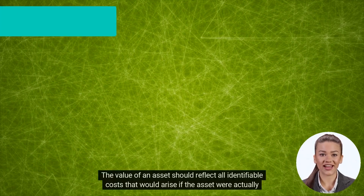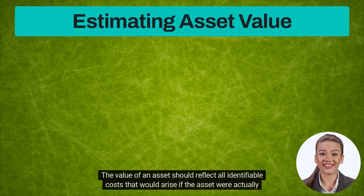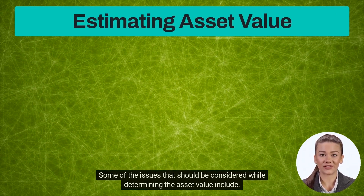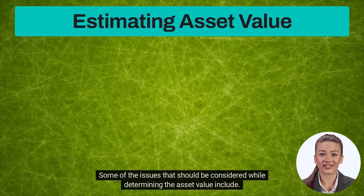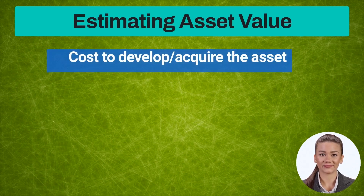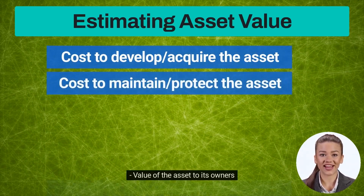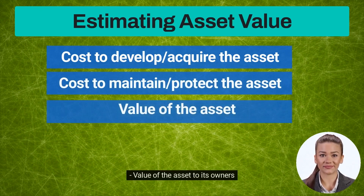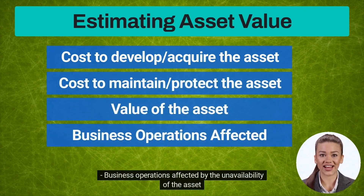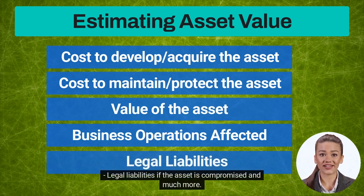The value of an asset should reflect all identifiable costs that would arise if the asset were actually impaired. Some of the issues to consider while determining asset value include: cost to acquire or develop the asset, cost to maintain and protect the asset, value of the asset to its owners, business operations affected by the unavailability of the asset, legal liabilities if the asset is compromised, and much more.